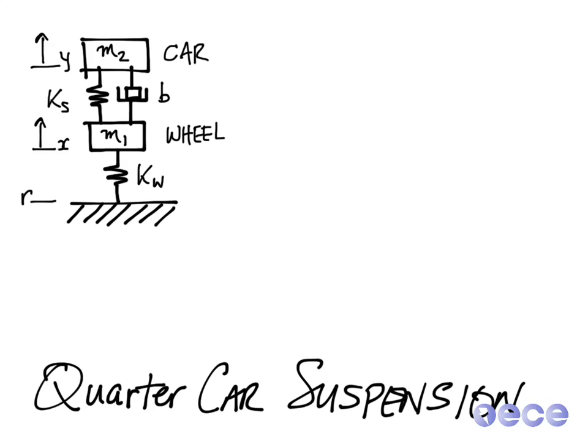And we have some values that correspond to each of these springs as well. So the stiffness of the two springs, as well as the amount that the dashpot B is going to be resisting changes in velocity.